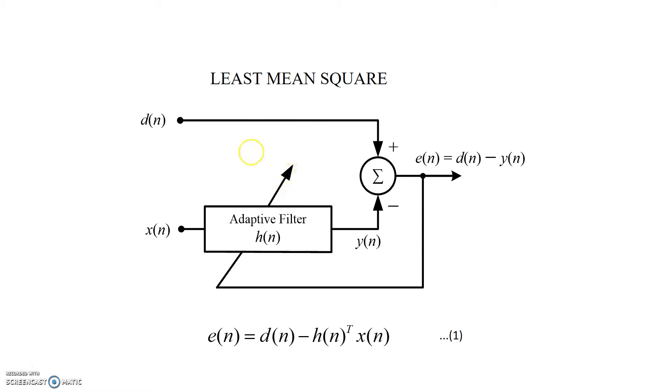In this structure, the structure that you see on the screen is a general configuration of adaptive filters where we have a desired signal d(n), a different signal x(n), adaptive filter coefficients h(n), and the output of the adaptive filter y(n). So what exactly we are doing here is we are subtracting this y(n) from d(n).